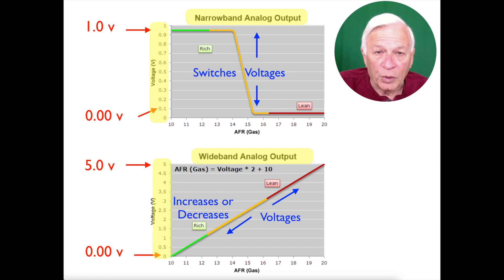The narrowband can only report that the mixture is either rich or lean, but not how rich or lean. And the wideband can report how rich or how lean the fuel mixture is. Now to learn more about air-fuel sensors, we'll cover that in a separate video.